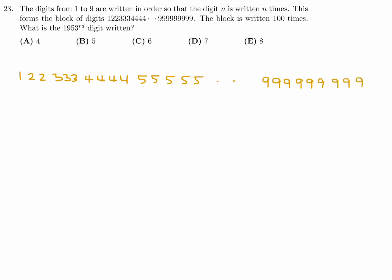Now what I'm going to do is add up how many numbers are there. Well, there's 1 one, 2 twos, 3 threes, 4 fours, 5 fives, 6 sixes, 7 sevens, 8 eights, and 9 nines. So I want to add up all of those guys. And when I do, you get 45. So each string has 45 numbers in it.